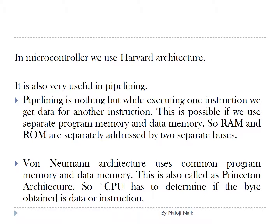So RAM and ROM are separately addressed by two separate buses in a microcontroller. Von Neumann architecture uses common program memory and data memory, so the CPU has to determine if the byte obtained is data or instruction. This is also called Princeton architecture.